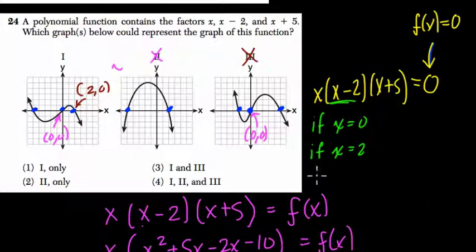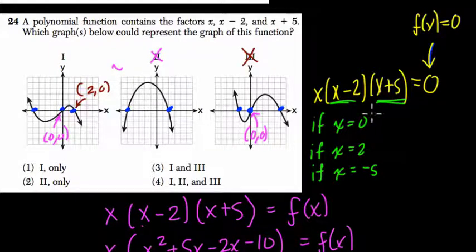Also, what could work is if x equals what? If x equals negative 5. If x is negative 5, then this term is 0, and the whole product would be 0. So x could be any one of these three values.